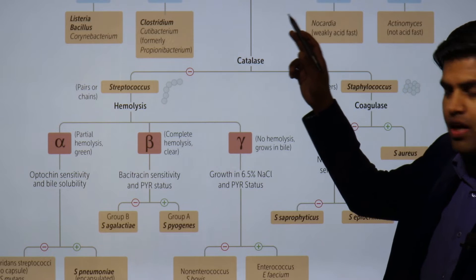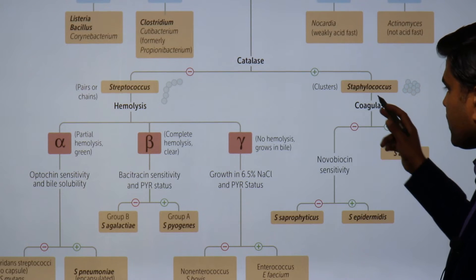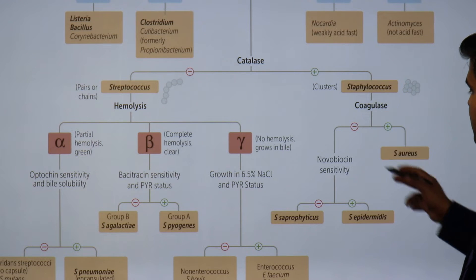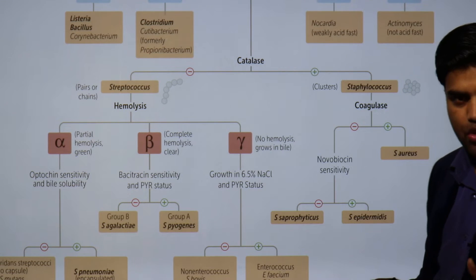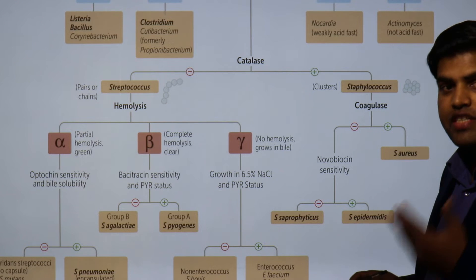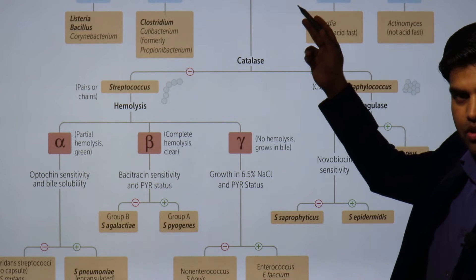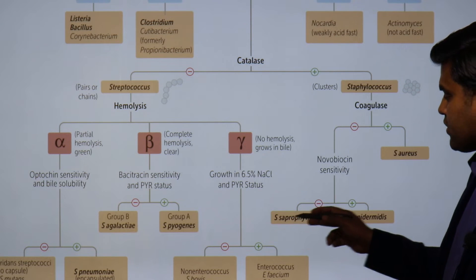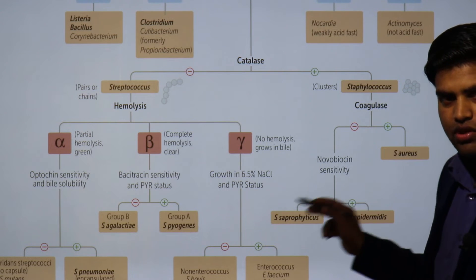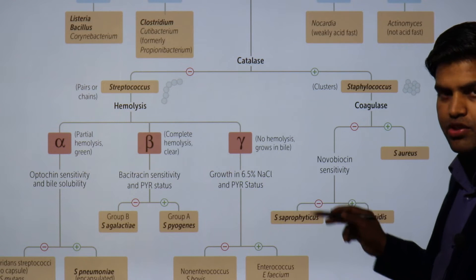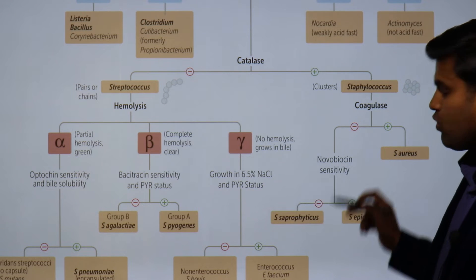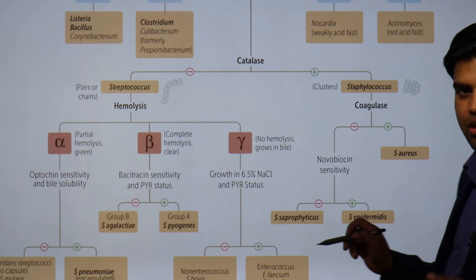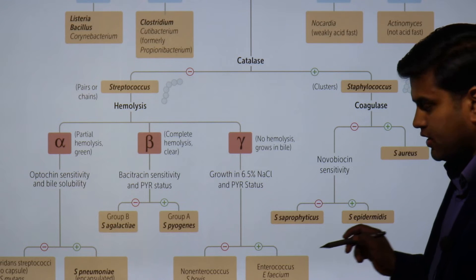A gram-positive coccus that is catalase-positive — we think about Staphylococcus. If it is coagulase-positive, then it is Staphylococcus aureus. If it is coagulase-negative, catalase-positive, then it is either Staphylococcus saprophyticus or Staphylococcus epidermidis, which can be differentiated by novobiocin sensitivity. Staphylococcus epidermidis is novobiocin-sensitive.